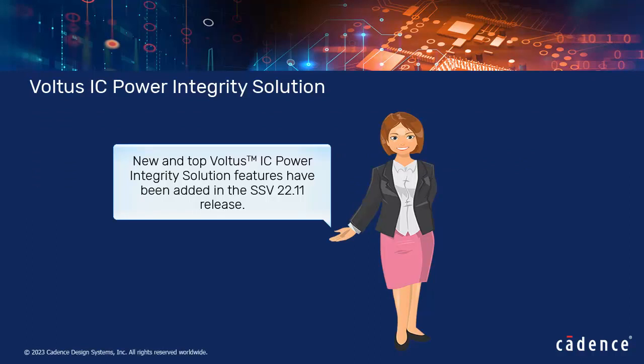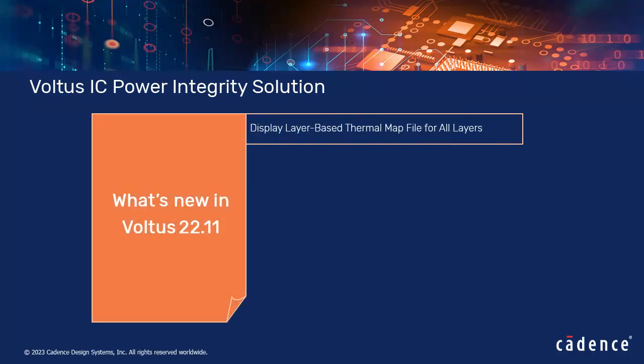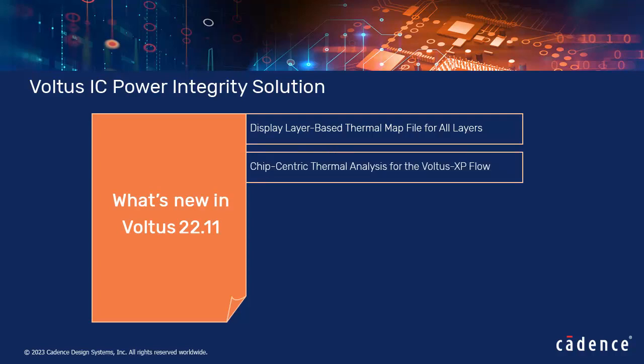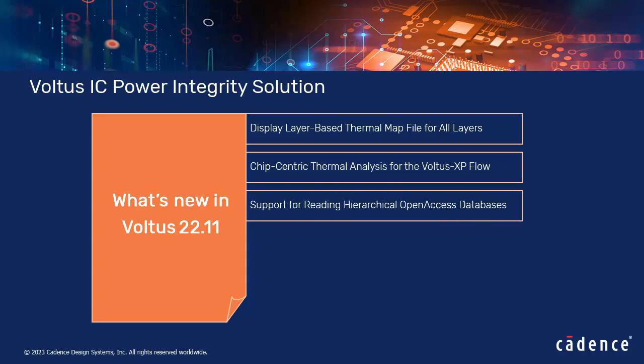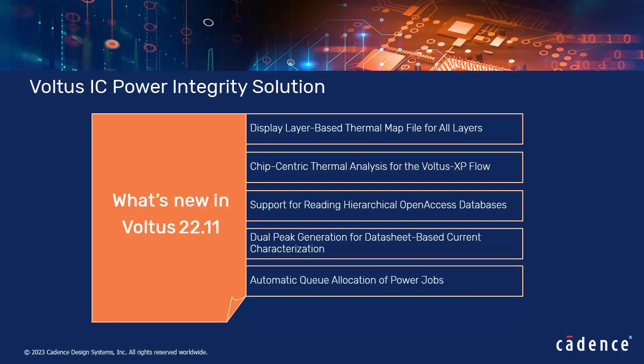In this video, you will get a quick overview on the key Voltus features implemented in the 22.11 release. First, we will look at the enhancement in GUI to load and display the layer-based thermal map files, and then we will explore the following key features: chip-centric thermal analysis for the Voltus XP flow, support for reading hierarchical open access databases, dual peak generation for datasheet-based current characterization, and automatic queue allocation of power jobs.